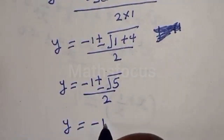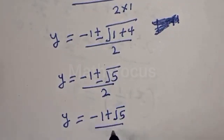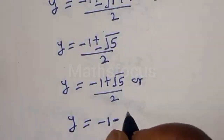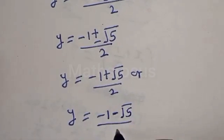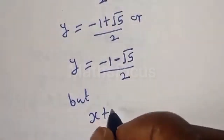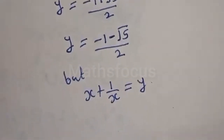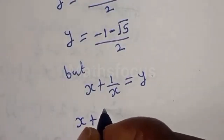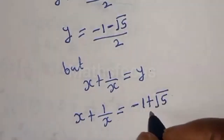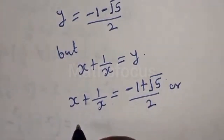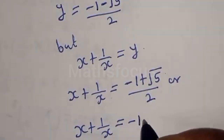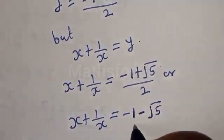Therefore y equals minus 1 plus square root of 5 over 2, or y equals minus 1 minus square root of 5 over 2. So x plus 1/x equals minus 1 plus square root of 5 over 2, or x plus 1/x equals minus 1 minus square root of 5 over 2.